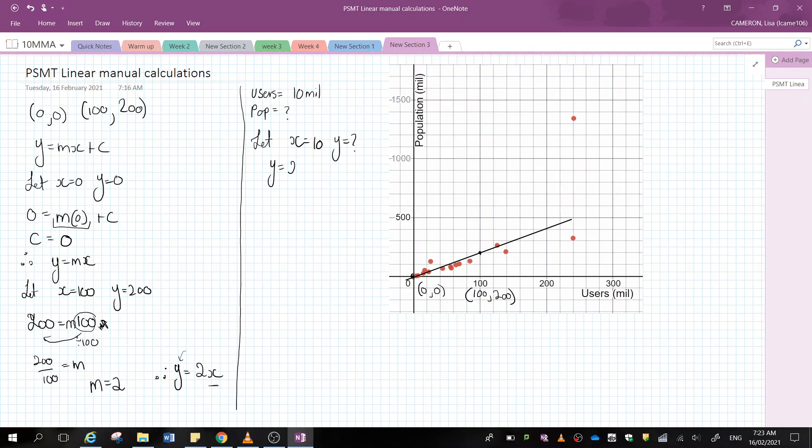So y is equal to 2 multiplied by 10. So y is equal to 20. Therefore, when the users are at 10 million, the population is approximately 20 million.